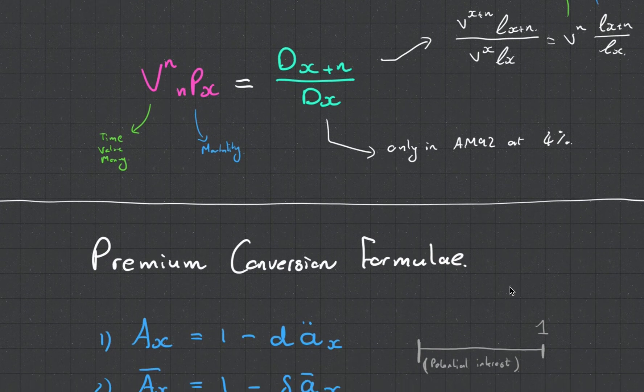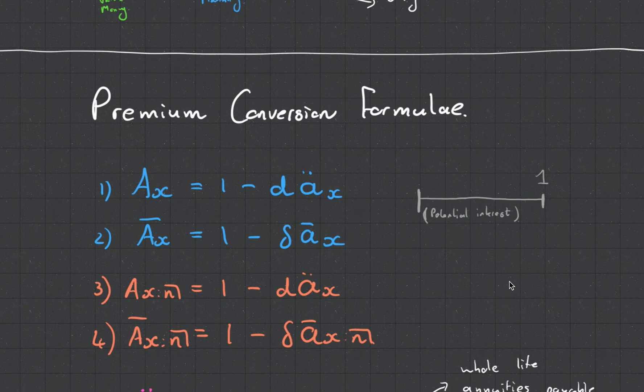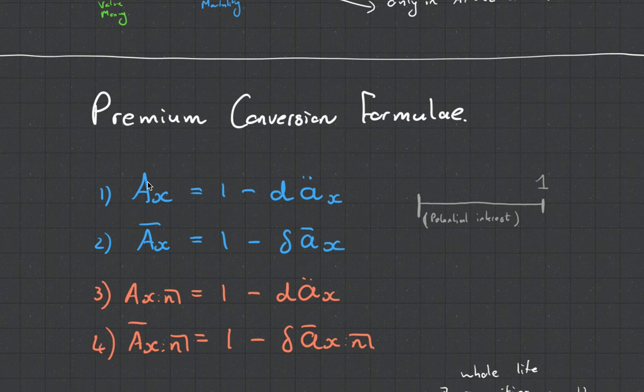And finally, I'm just going to show you some premium conversion formulas. This is more from just thinking about it logically. AX is equal to one, because remember, a one sits in front of this guy here. And what you're doing, so on our timeline, the one would be sitting there and AX would be sitting there.